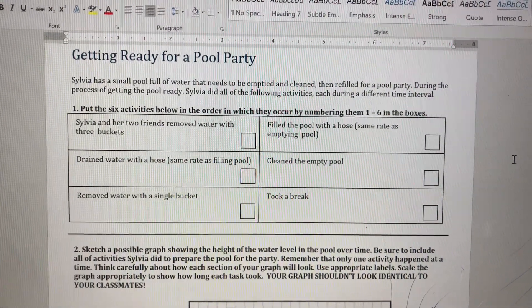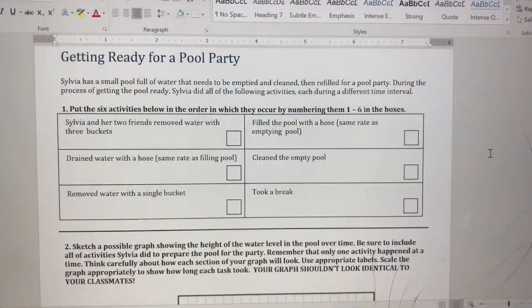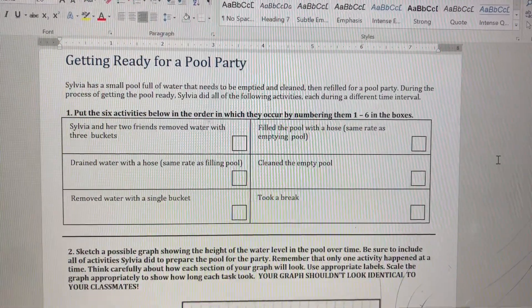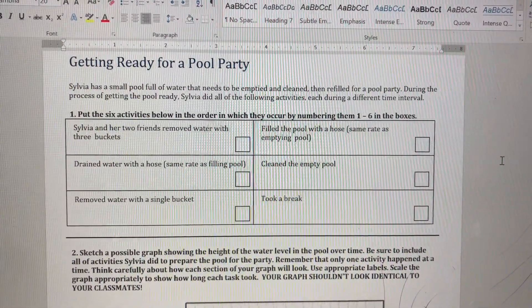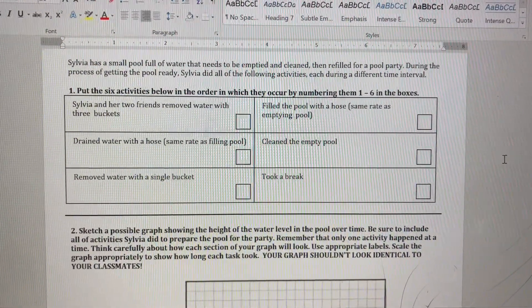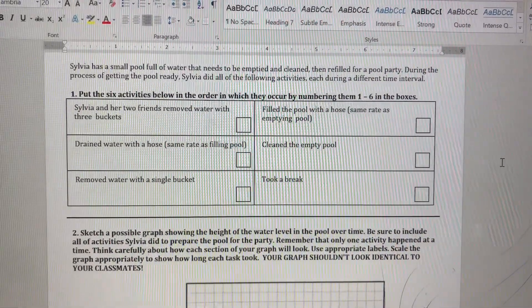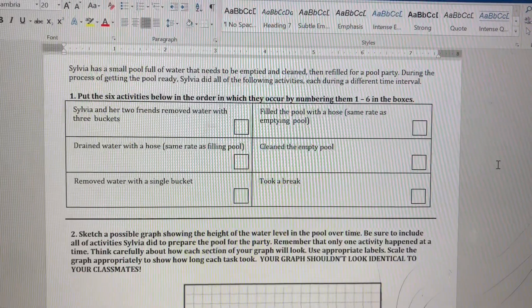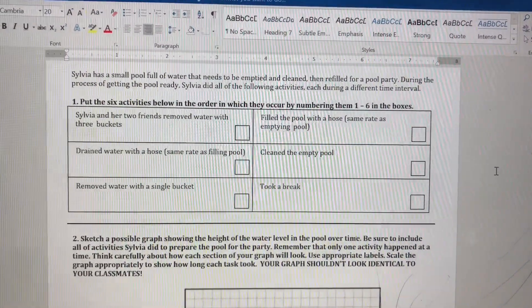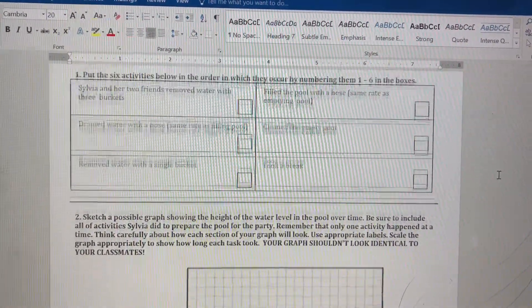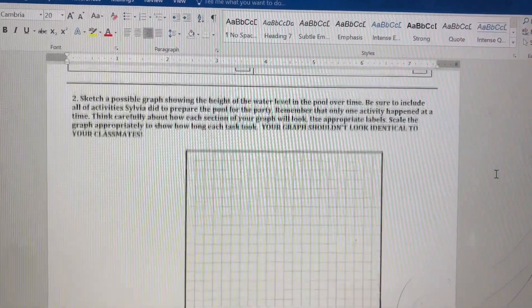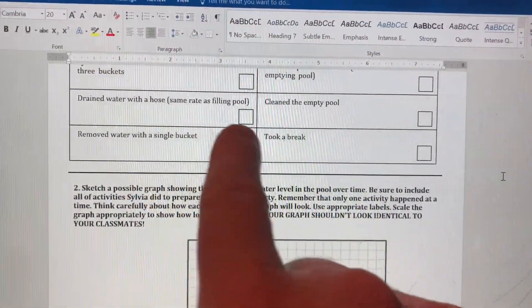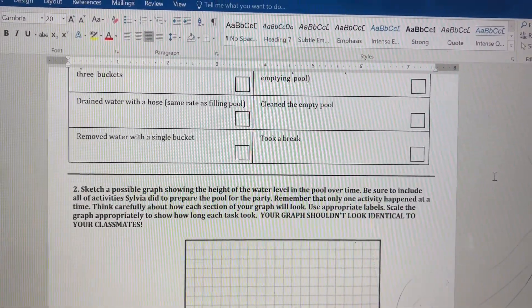You need to try to arrange those in the most logical way. There's definitely one sequence that I had in mind. I guess you could technically rearrange a couple of those and it would still make sense, but you probably wouldn't have the last activity as clean the empty pool, since the whole point of this is to empty the water, clean it, and fill it back up. Just make sure that it makes sense. Once you've rearranged those, by the way, you can just put the numbers in the boxes here for step one through six.